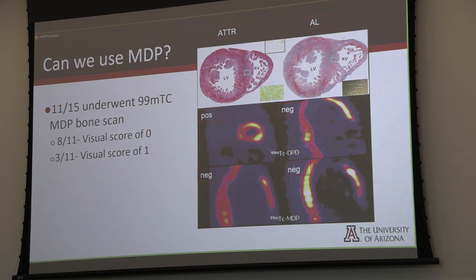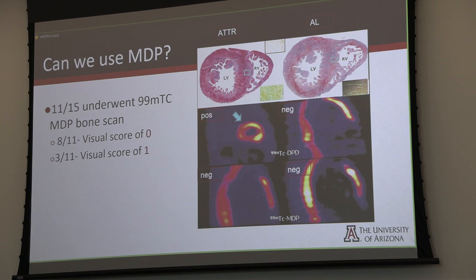Looking at the oncology bone scan in the United States — MDP — you can see that on a patient with ATTR, there is positive uptake in the heart, so positive that there is almost no uptake in the bones: grade 3. However, on AL there is no uptake. And the oncology MDP tracer is negative on both ATTR and AL. The data we have on MDP shows it is inferior, and we'll speak about that when there's a shortage of PYP.